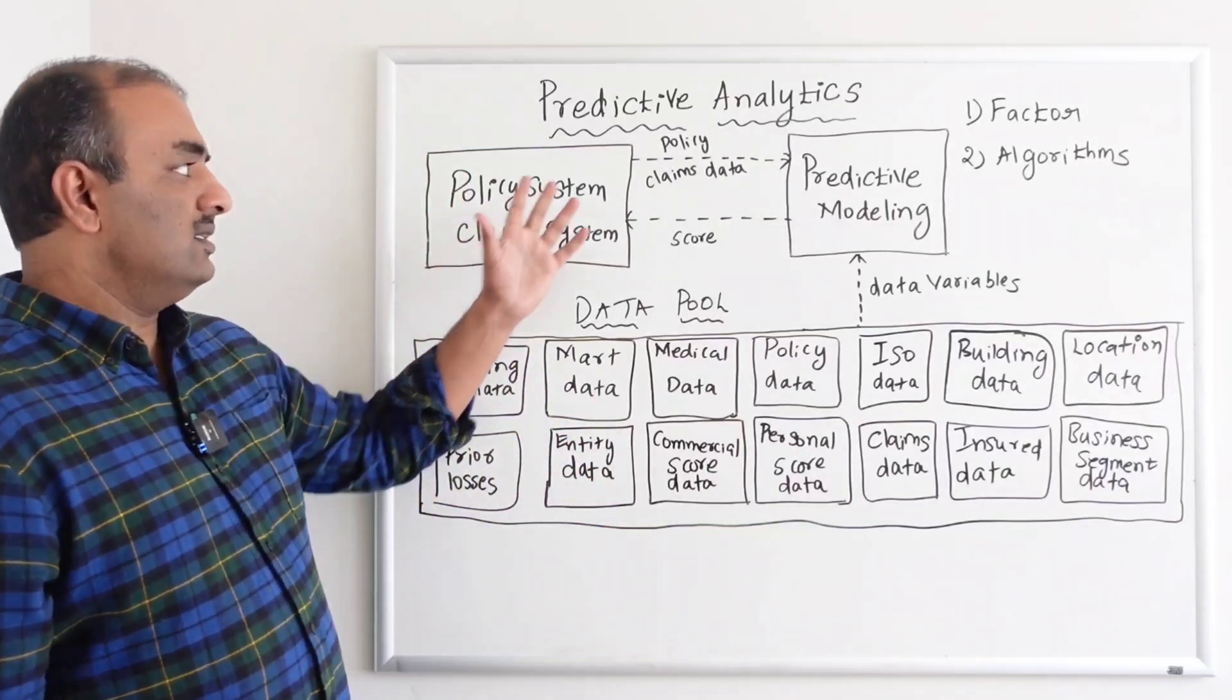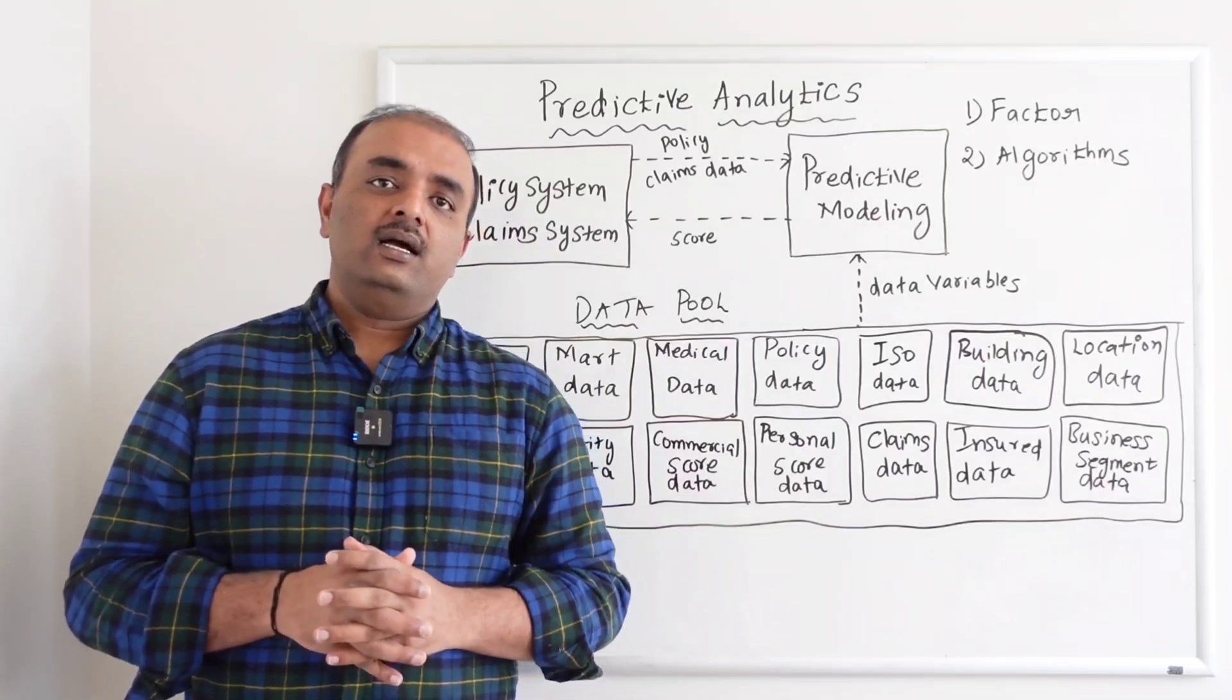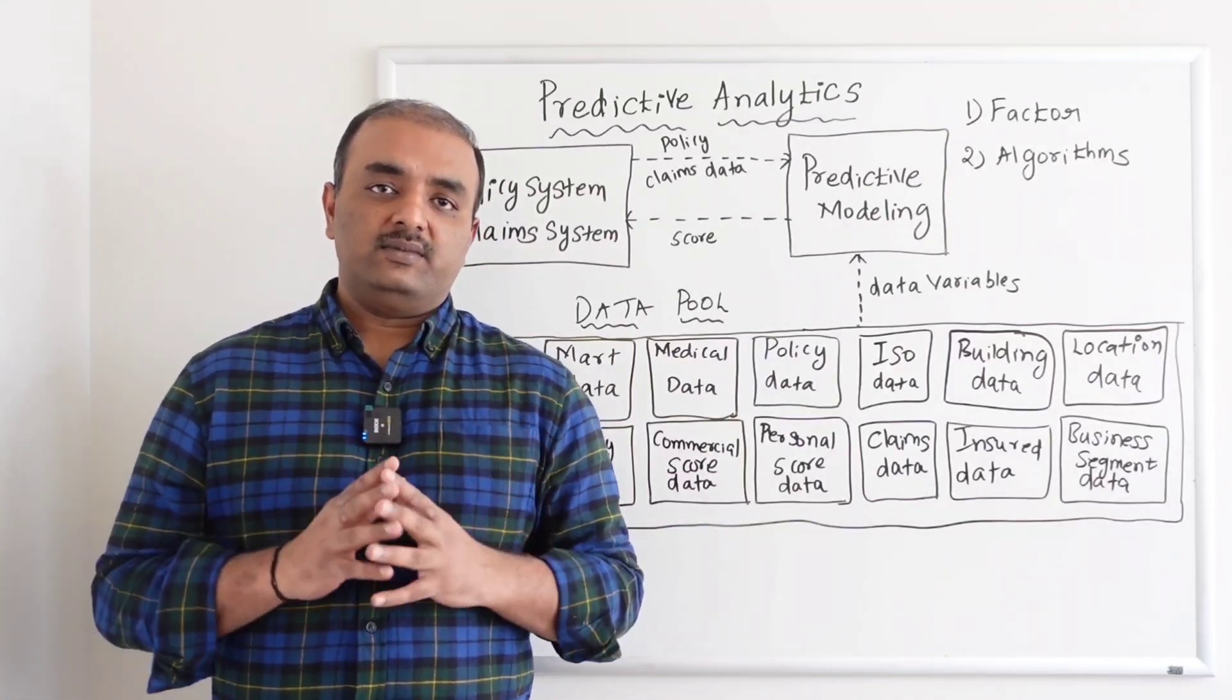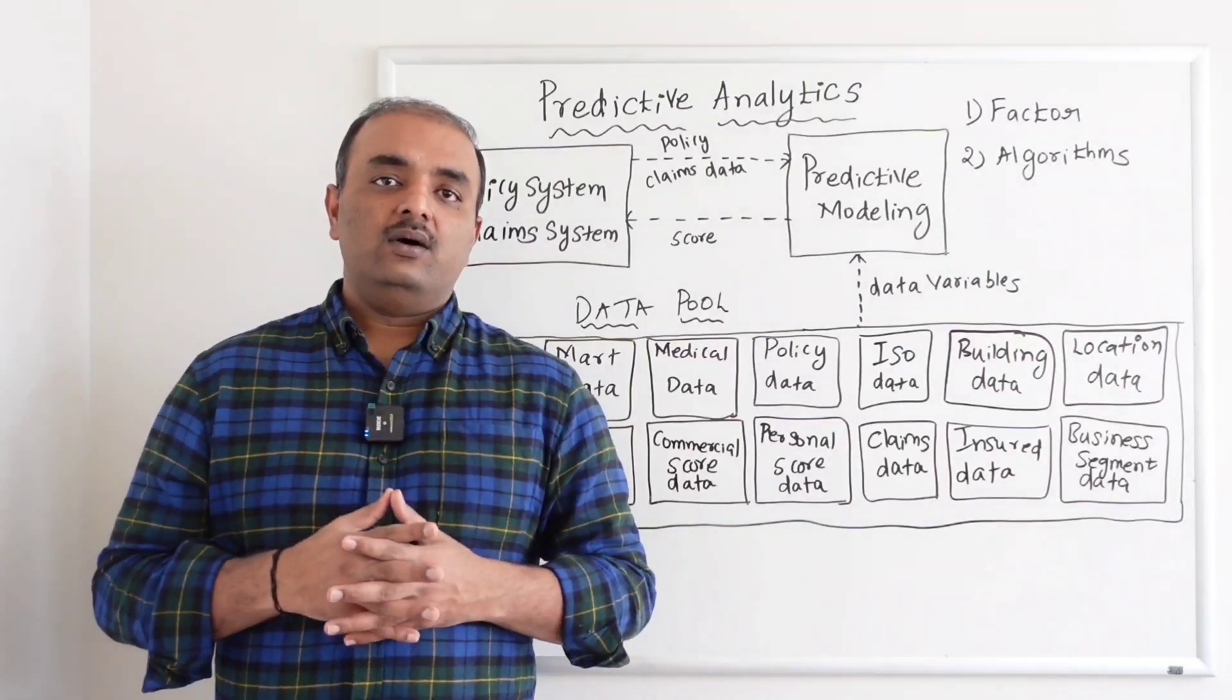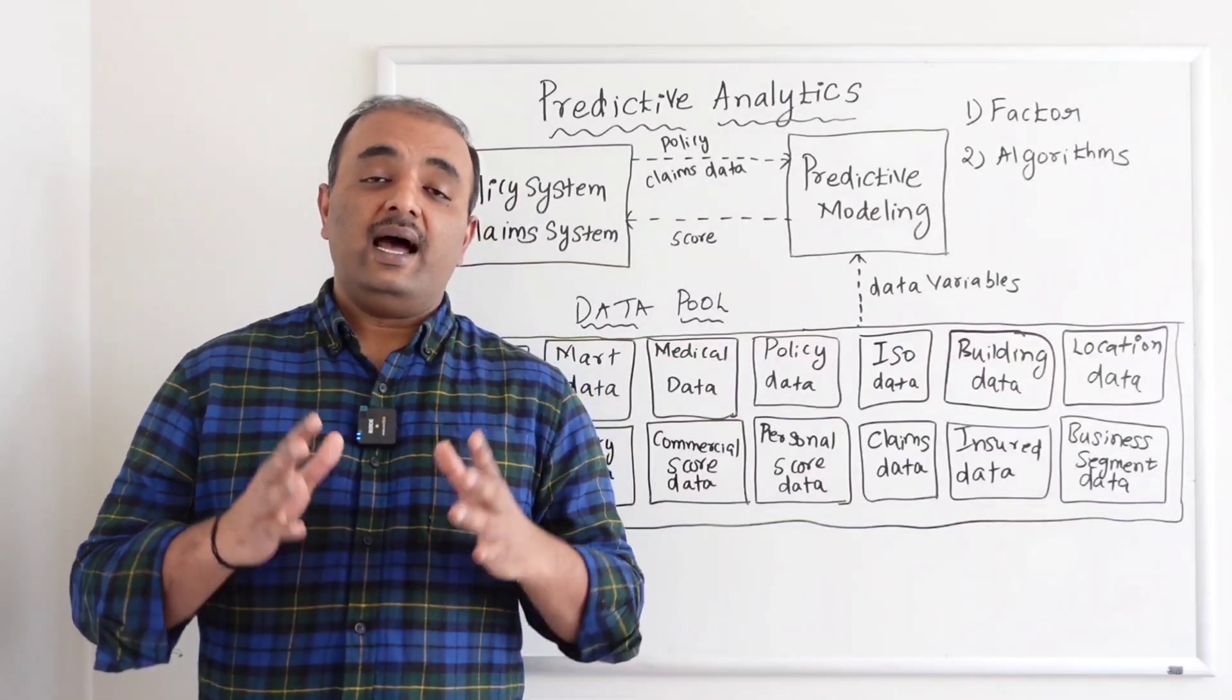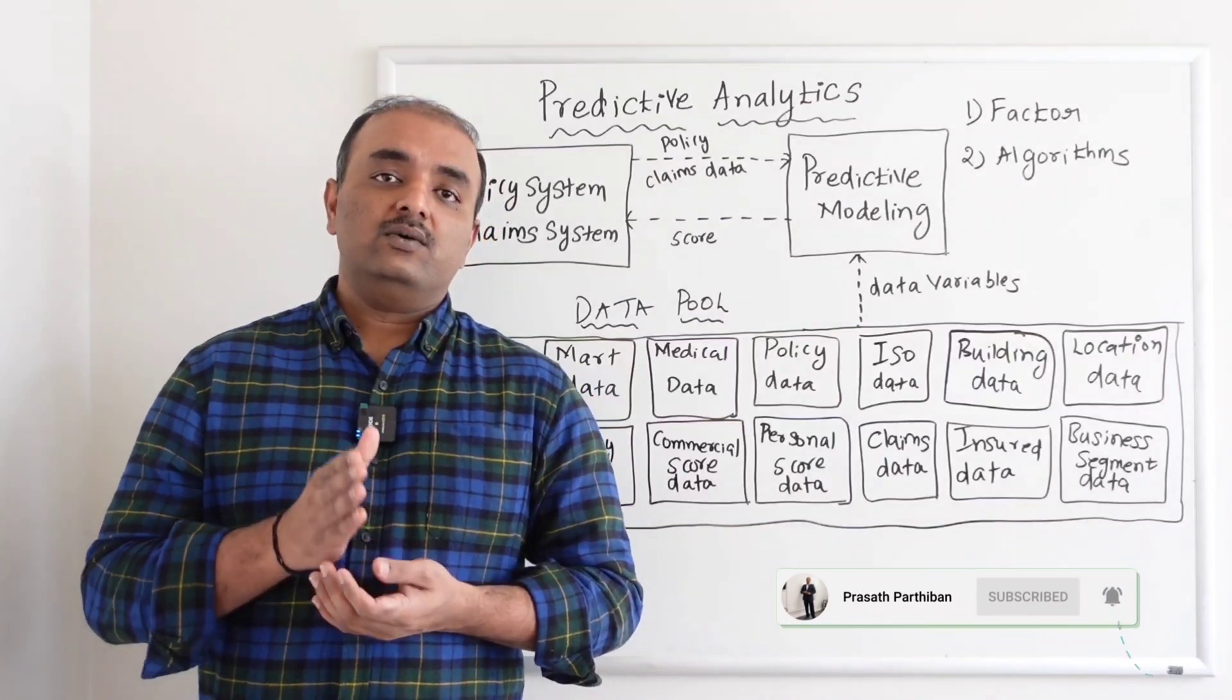So once you send the policy data, that's the policy side of things. Coming to claims side - assume I have a customer who is creating a new claim. Now when they create a new claim, we do not want the adjusters - for those who are new to adjusters, they are the one who reviews the claim,